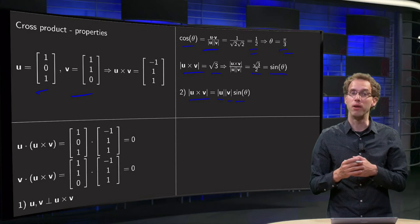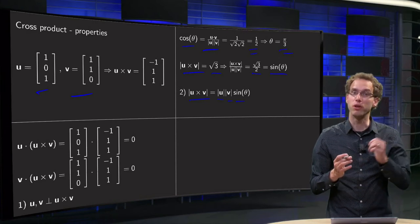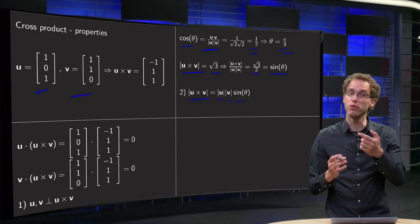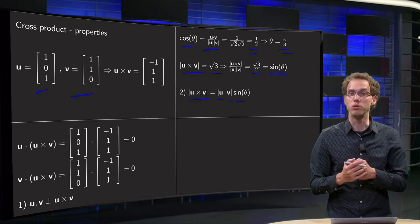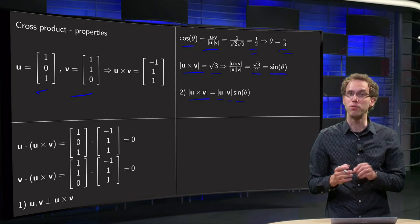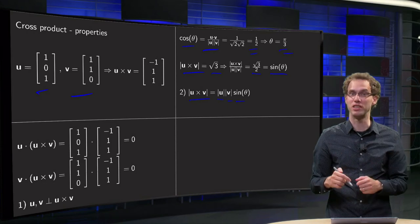And for this, you can use again u equals u1, u2, u3, v equals v1, v2, v3. And in this proof, you also use the inner product. So this is quite a lengthy proof, but you can do it. So this example only illustrates this fact.